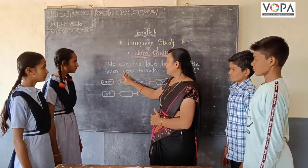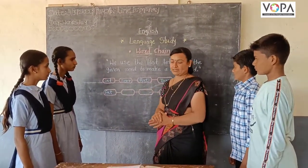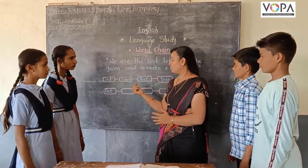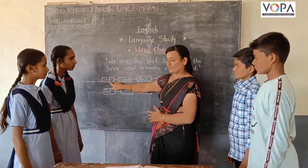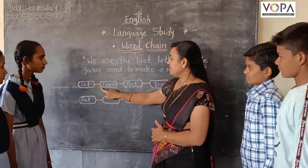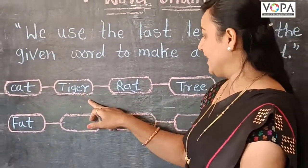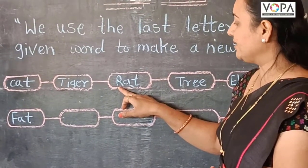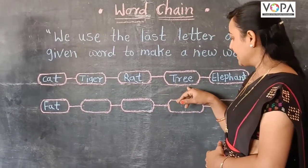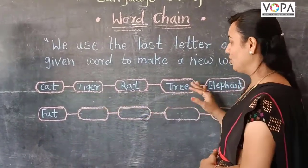We use the last letter of the given word to make a new word. For example, tiger — because tiger starts with T, the last letter is R, so we write rat. Rat starts with R, and the last letter is T, so we write tree. The last letter of tree is E, so we write elephant. In this way we complete the word chain. Is it interesting? Yes!